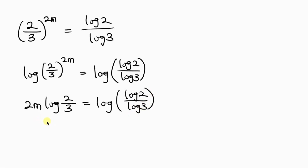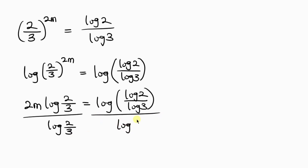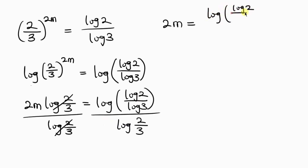Our next step will be to divide both sides by log(2 over 3). Log(2 over 3) cancels out from the left, leaving 2m equal to, on the right hand side, log of (log 2 over log 3) all over log(2 over 3).